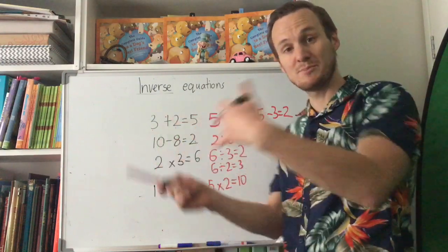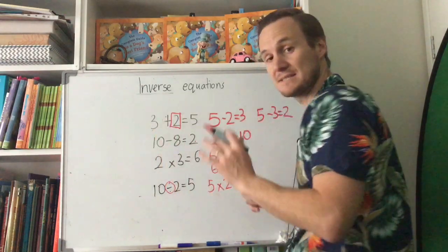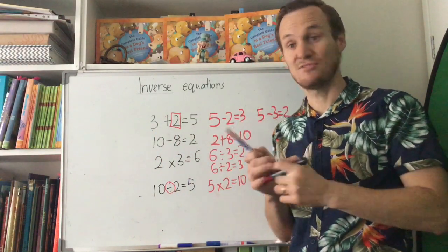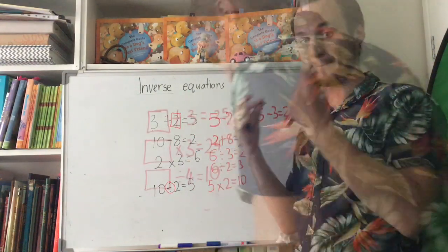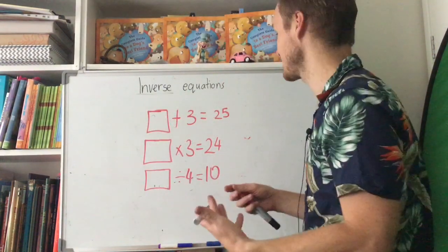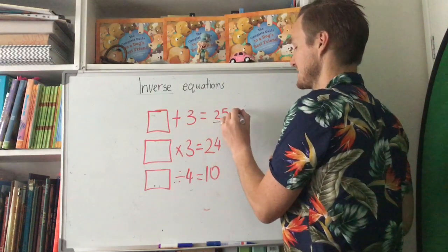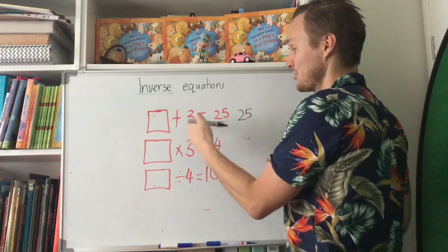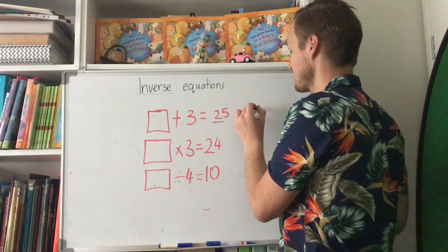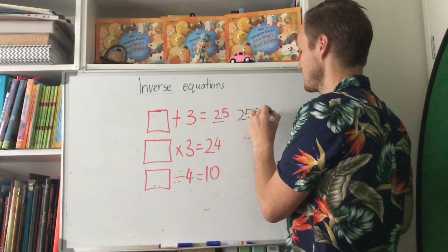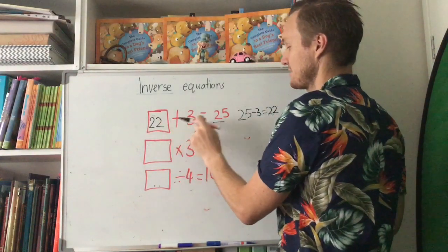Now we're going to start replacing some numbers with blanks and see if you can find the missing numbers. So we start with the answer, do the opposite operation. For example, if the answer is 25 and the operation is addition with 3, the opposite of addition is subtraction: 25 subtract 3 equals 22. Let's check: 22 plus 3 equals 25. Great, that works!